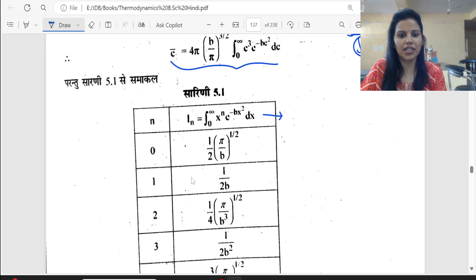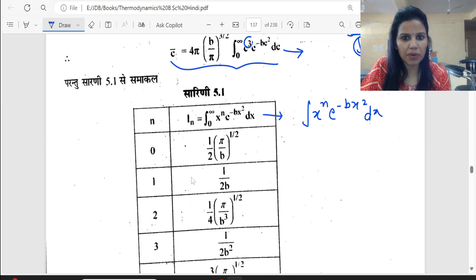So you have integration here: x power n, e power minus bx square dx. We have to see which integration is the same. We have power 3.